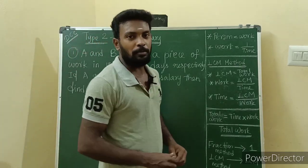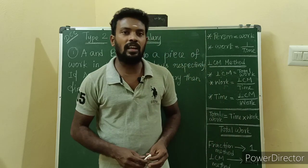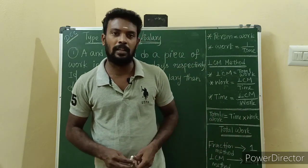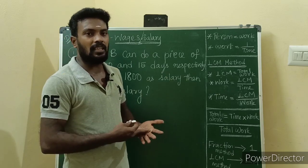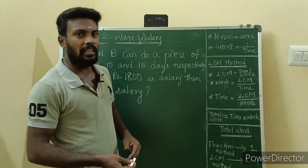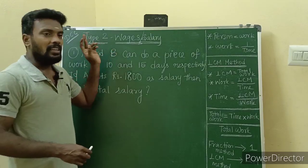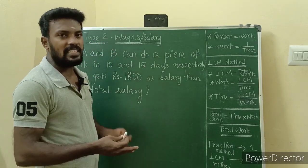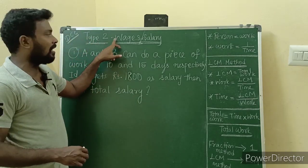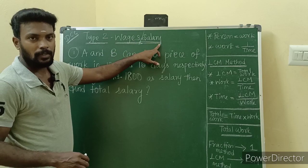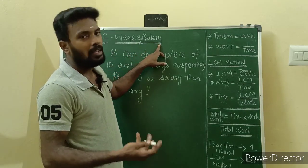Hi friends! Welcome to DCC! We already have two parts in time and work. What are we going to talk about? Basic and Type 1. Type 2. Time and work is going to talk about salary — wages or salary, coolie or sample or work.